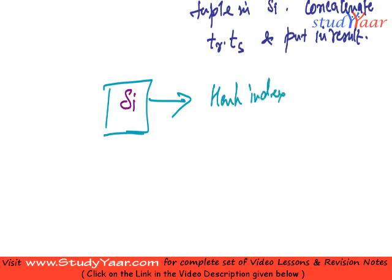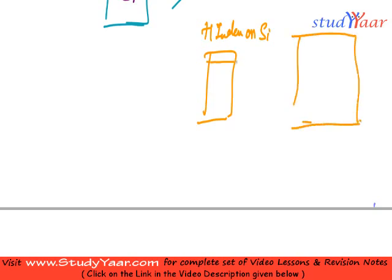So what's going to happen is the result is that we get a hash index of SI. Hash index on SI over here, and here is the SI itself.